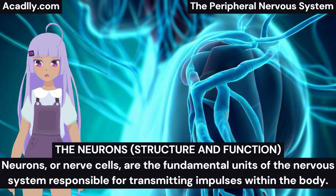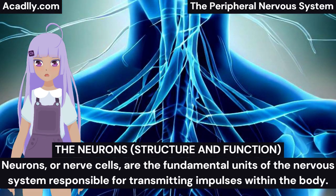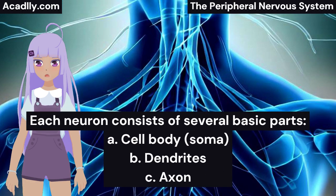The Neurons: Structure and Function. Neurons, or nerve cells, are the fundamental units of the nervous system, responsible for transmitting impulses within the body. Each neuron consists of several basic parts. A. Cell Body (Soma): This contains a large nucleus and dense granulated cytoplasm, giving it a grayish color. It relays received impulses from dendrites to the axon. B. Dendrites: These are short extensions or processes branching from the cell body, forming numerous branches. They carry nerve impulses received from sensory receptors and other neurons.